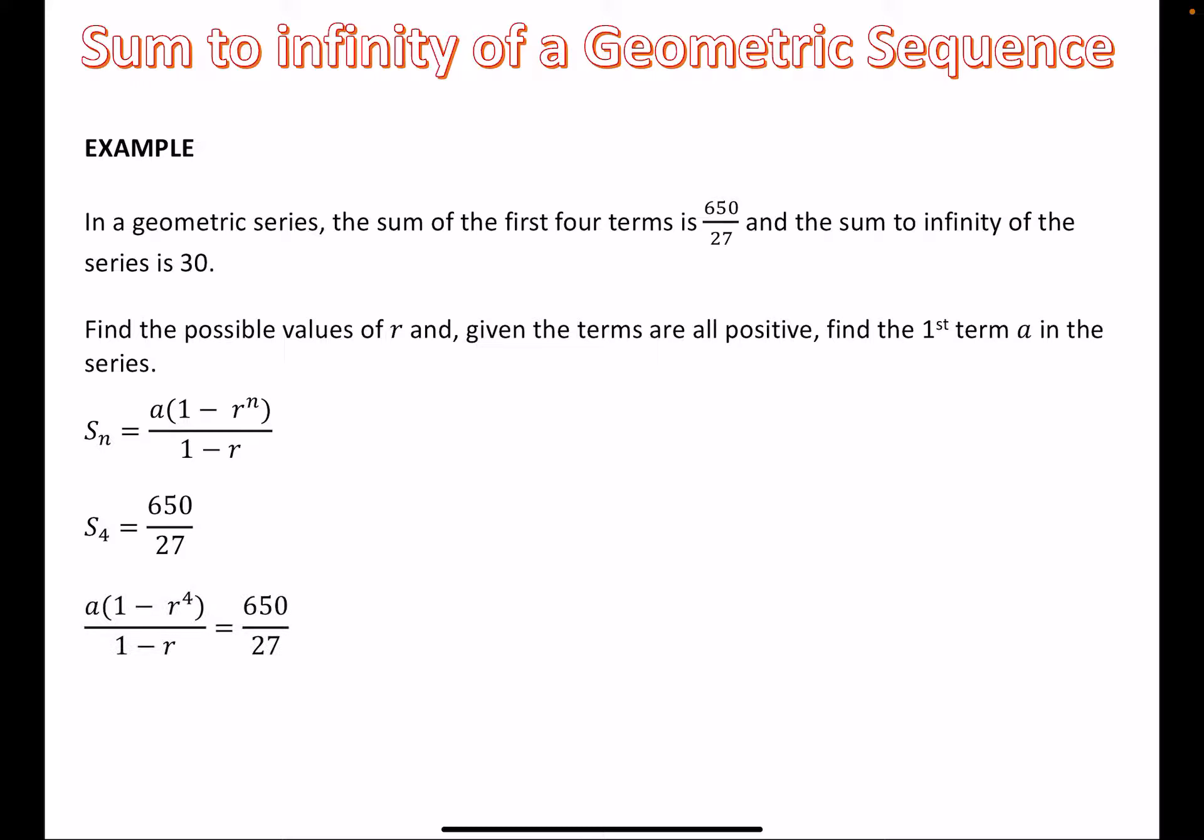So we know the sum of the first four terms, so we can kind of pop that straight in. The sum S_4 is equal to 650 over 27. In which case, a multiplied by 1 minus r to the power of 4 over 1 minus r is 650 over 27. And we can kind of play around with that a little bit. In which case, we can end up with something like that. It's not really helping us that much, but it's going to help us in a second. So the sum to infinity, we know is 30, so we can say that a over 1 minus r is going to equal 30.